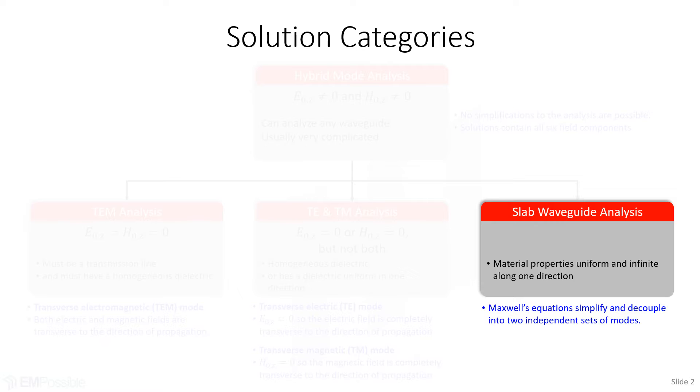A slab waveguide: we have the direction the wave is propagating in, but in the plane perpendicular to that, if your waveguide is uniform and constant and of infinite extent in the other direction, you have a slab waveguide. That's what we're talking about here.